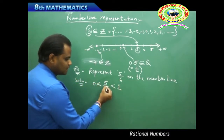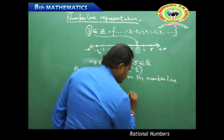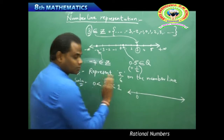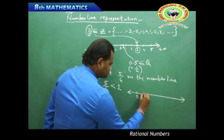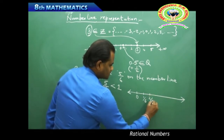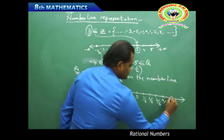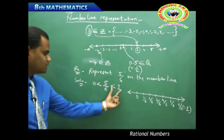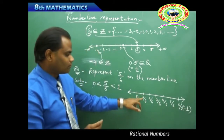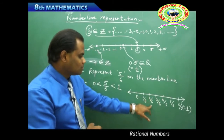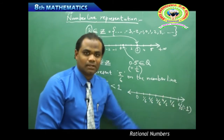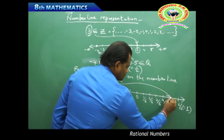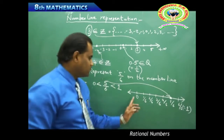Since 5/6 lies between 0 and 1, I divide the number line segment from 0 to 1 into sixths: 1/6, 2/6, 3/6, 4/6, 5/6, and 6/6 which equals 1. The values between 0 and 1 are equally divided in fractions of 1/6. I can then easily identify 5/6 at the fifth division point between 0 and 1.